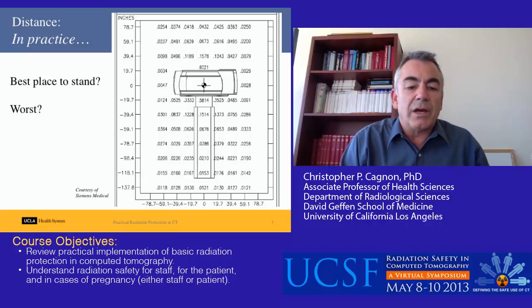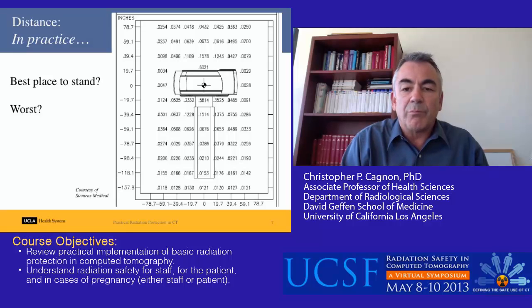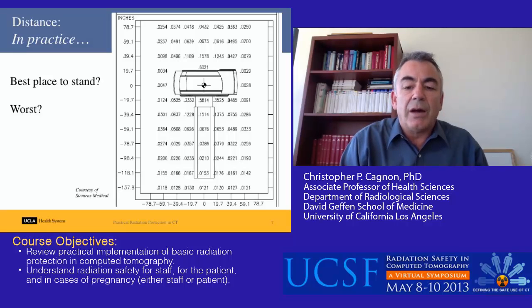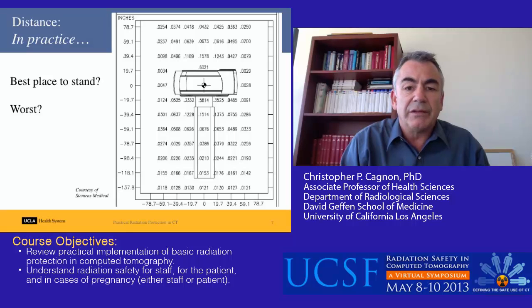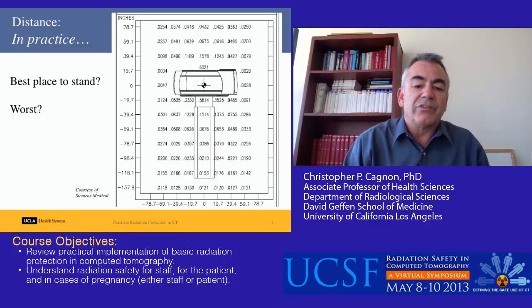Here's a radiation scatter and leakage profile plot courtesy of Siemens Medical Systems. This is what a physicist would use for site planning for shielding. These numbers represent actual doses for a certain technique with a phantom in the beam, creating scatter at different distances — all in the plane of the scanner. The question is: where is the best place to stand, and where is the worst place to stand?